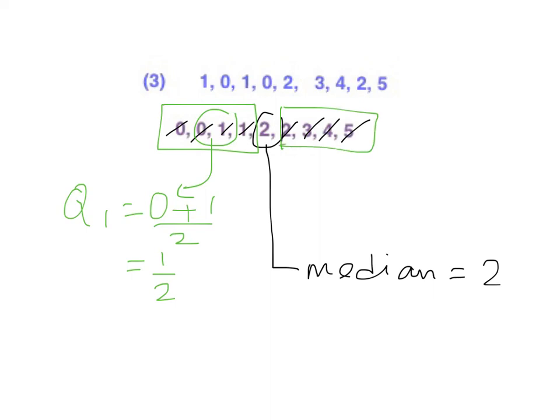Similarly, the third quartile happens in this set of data, and it's between 3 and 4, so the third quartile is 3.5. The interquartile range, then in this case, will be 3.5 minus 0.5, so the answer is 3.